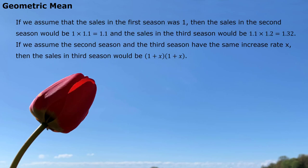If we assume that the sales in the first season was 1, then the sales in the second season would be 1 times 1.1, which equals 1.1. And the sales in the third season would be 1.1 times 1.2, which equals 1.32. If we assume the second season and the third season have the same increase rate x, then the sales in the third season would be (1 + x) multiplied by (1 + x).